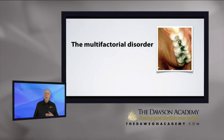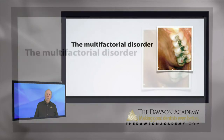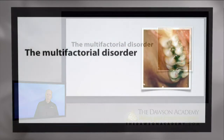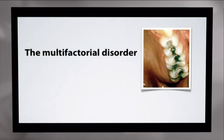Now we want to add just one thing: an occlusal interference to that second molar. The red mark shows where it is — introduced to a perfected occlusion, either orthodontically or with a crown that isn't exactly right. What are all the things that can happen from just that one interference on one tooth?